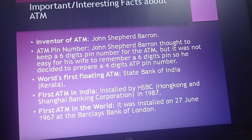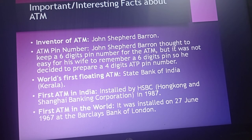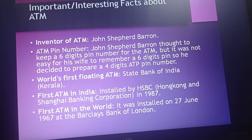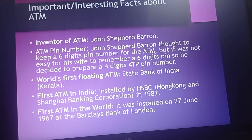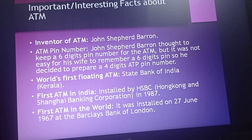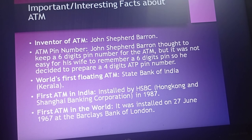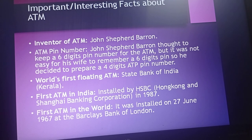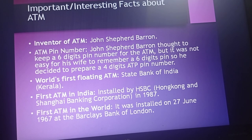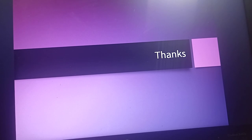Some interesting ATM facts: the ATM was invented by John Shepherd-Barron. He originally thought of a six-digit PIN number, but his wife could not remember it, so he finalized a four-digit ATM PIN. The world's first floating ATM was established by State Bank of India in Kerala. The first ATM in India was installed by HSBC (Hong Kong and Shanghai Banking Corporation) in 1987. The first ATM in the world was installed on 27th June 1967 at Barclays Bank of London. Thank you.